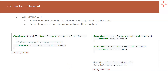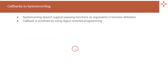That is the idea of using callbacks in a programming language — we pass a function as an argument to another function. However, SystemVerilog doesn't support passing a function as an argument to another function. Therefore, to achieve callbacks in SystemVerilog, you have to use object-oriented programming, specifically concepts like inheritance and function overriding.